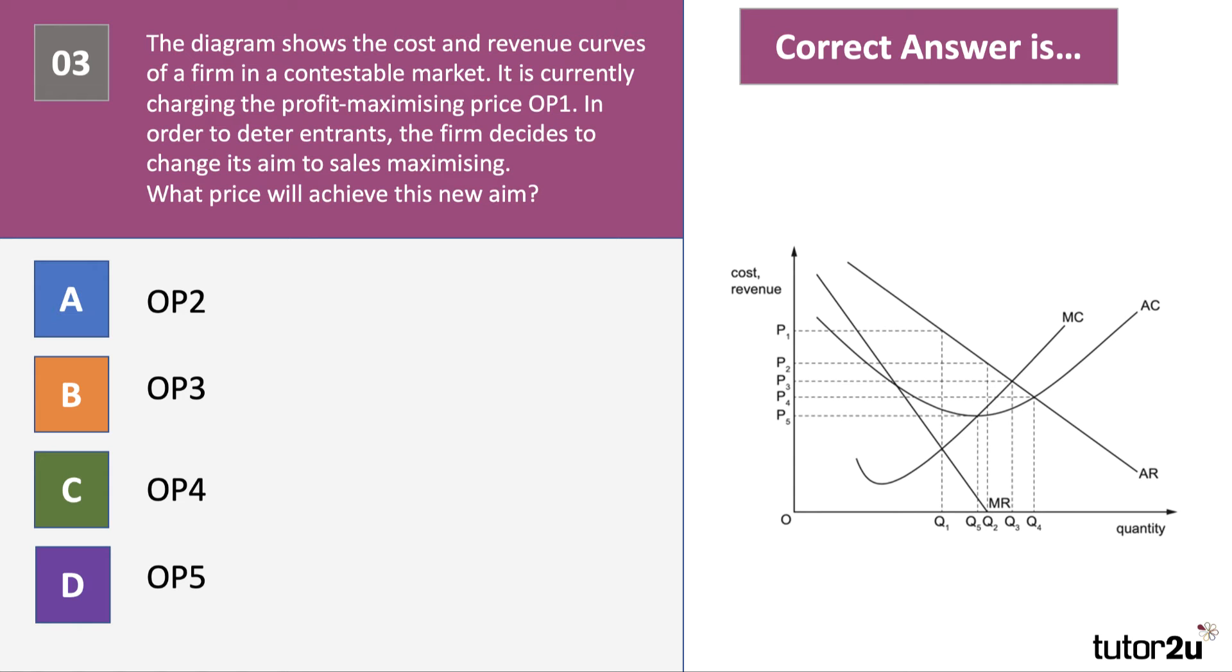And the question is what price of those options there, OP2, OP3, OP4, OP5, what price will achieve this new aim? So have a go please at question number 3.